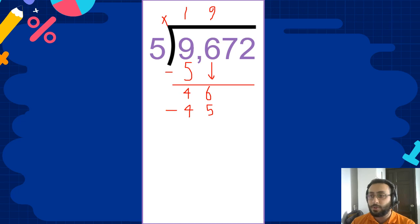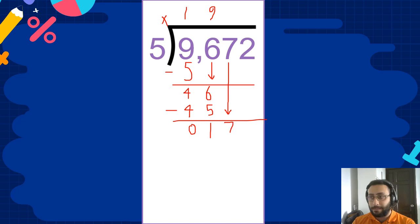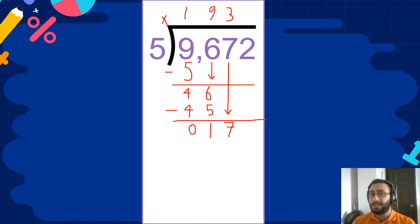We subtract again. What do we get? 1. What do we do? We bring the next digit down — 7. So we ask ourselves, how many 5's fit into 17? Easy. 3. Because 5 times 3 is 15, not 18. So it's 3. 3 times 5 is 15.